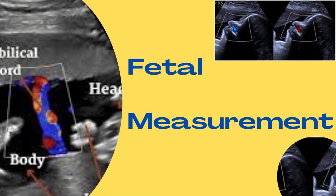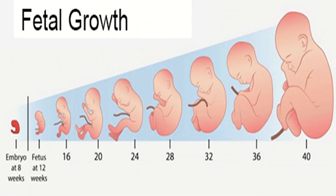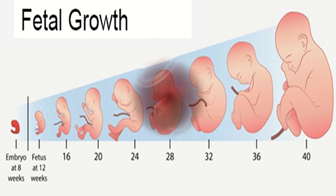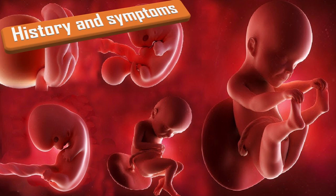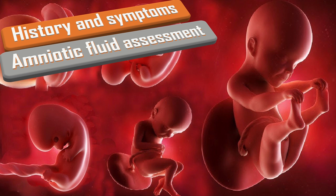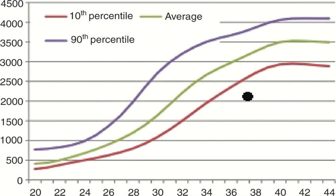Fetal size is measured at a single time point in pregnancy and assessed via individual biometric measurements, for example head circumference, abdominal circumference, and femur length, or when these measurements are combined we get the estimated fetal weight using different formulas. Fetal growth is a dynamic process occurring throughout pregnancy, requiring multiple assessments and a minimum of at least two measurements of fetal size. Additional information that can be considered includes maternal history and symptoms, amniotic fluid assessment, and Doppler velocimetry.